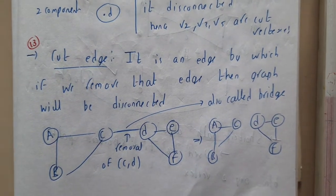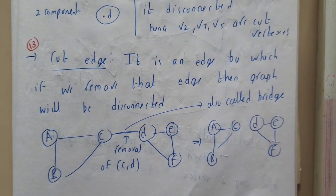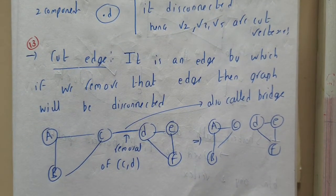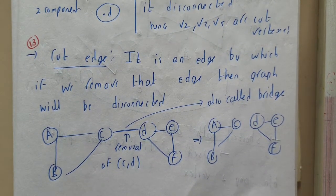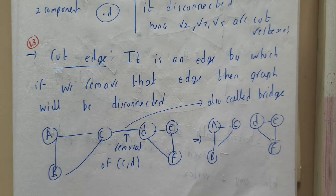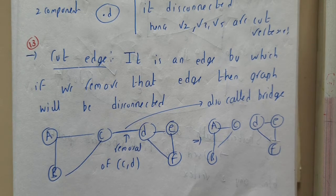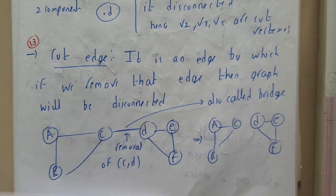Hello guys, we are back with our next lecture. In this lecture, let us go through cut edge. In the last lecture we discussed cut vertex, right? So what is cut edge now? Basically, by removing one particular edge, if the graph becomes disconnected, that edge is nothing but a cut edge.